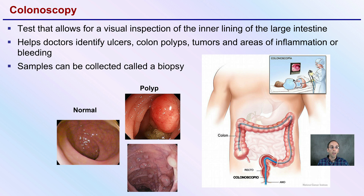A colonoscopy is a test that allows for visual inspection of the interior lining of the large intestine. It helps doctors identify ulcers, polyps, tumors, and areas of inflammation or bleeding, and samples can be collected for biopsy. This is how a healthy colon should look. A very large polyp and numerous small polyps can also be seen — basically, a camera goes through so doctors can get a visual inspection. If polyps are caught early, it can be a life-saving procedure.